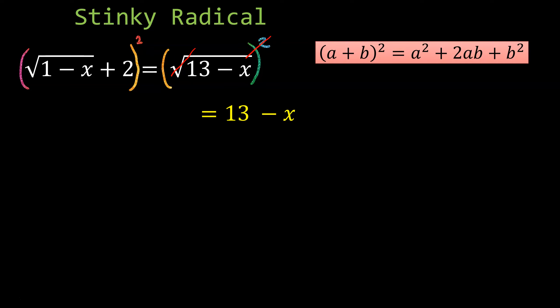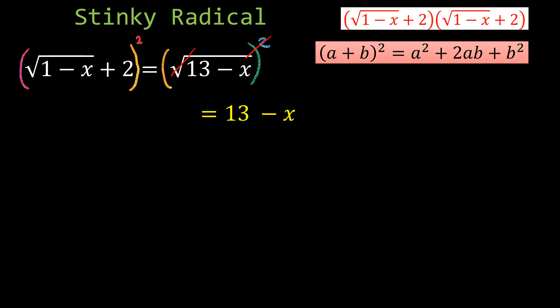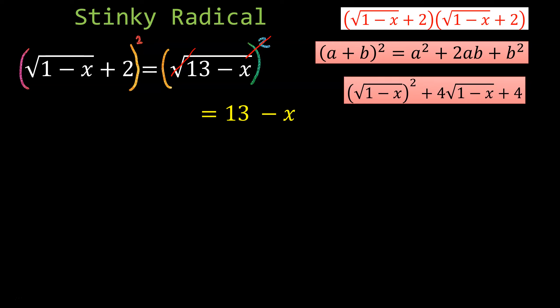A perfect square binomial: (a + b)² = a² + 2ab + b². If you don't have that memorized, just multiply the binomial by itself and distribute, then combine like terms. Applying the perfect square property: a² + 2ab + b². The square and square root undo each other, giving 1 minus x. Combining terms, the left hand side becomes 5 minus x plus 4 times the square root of (1 minus x). At least we got one radical right away.